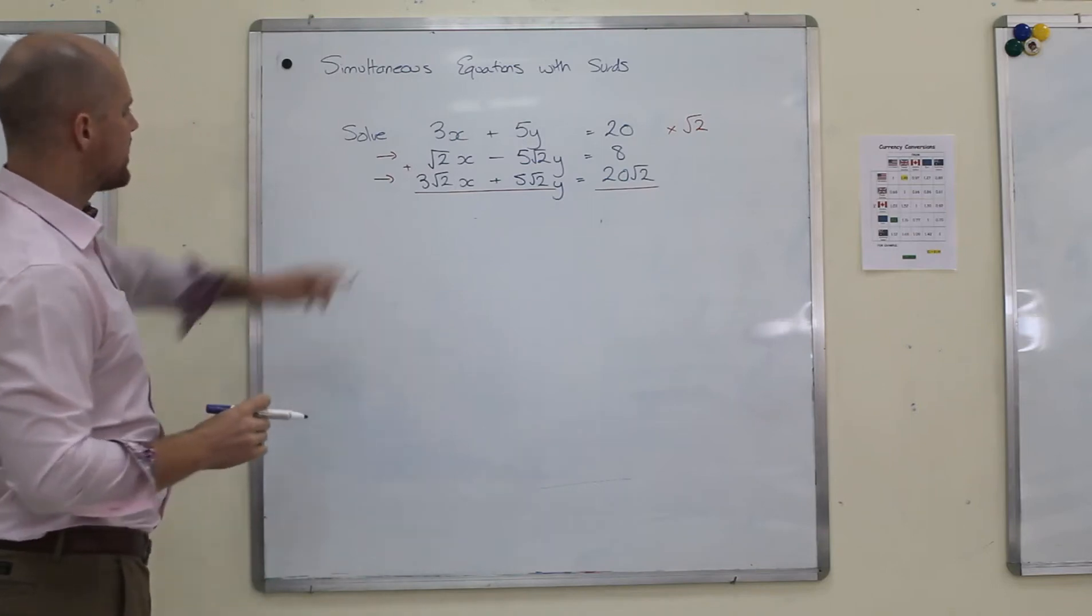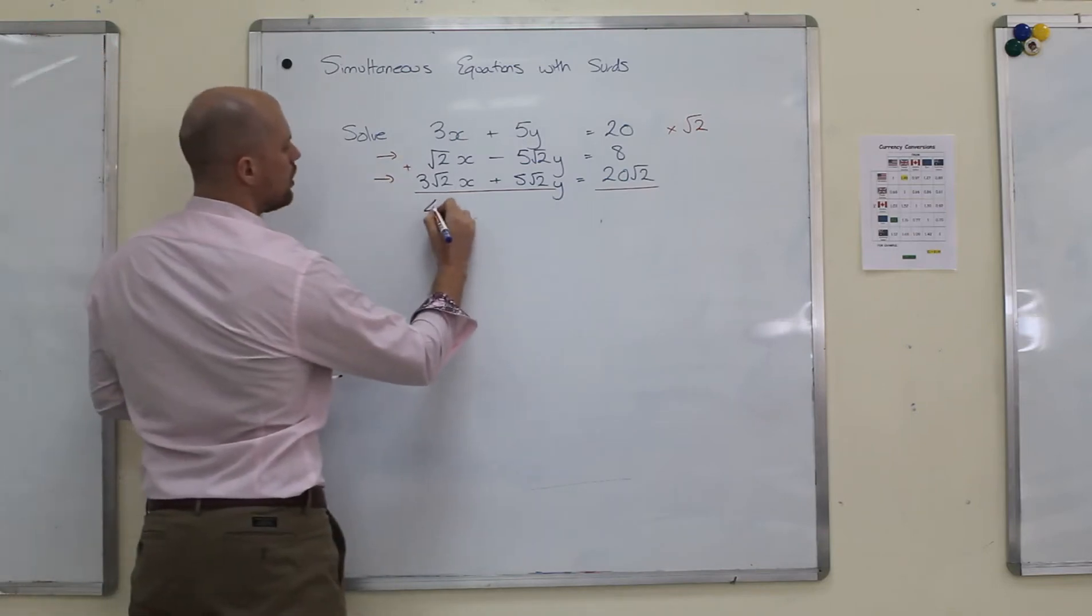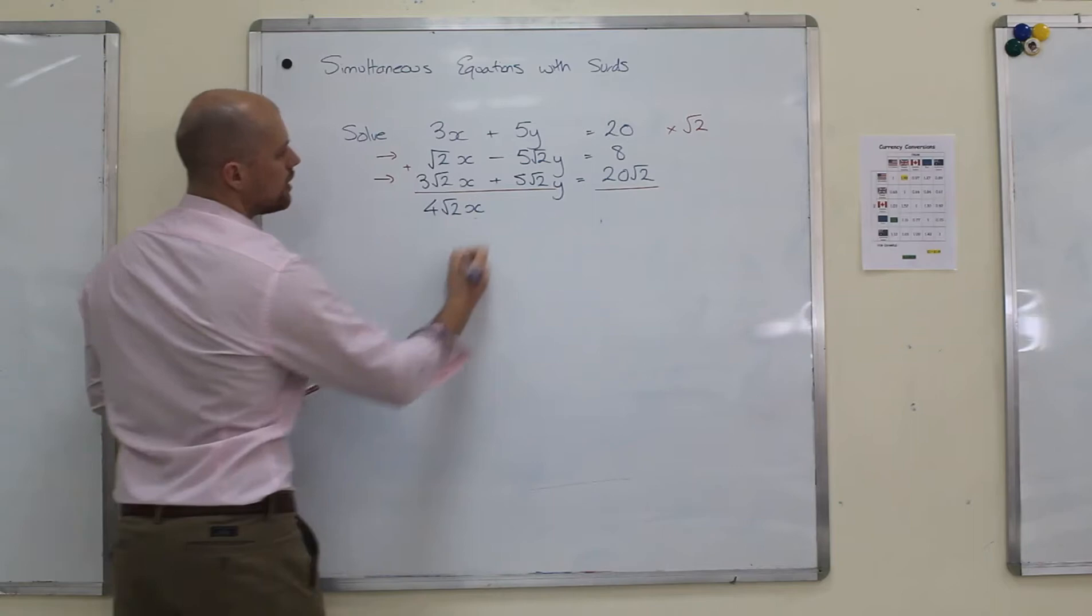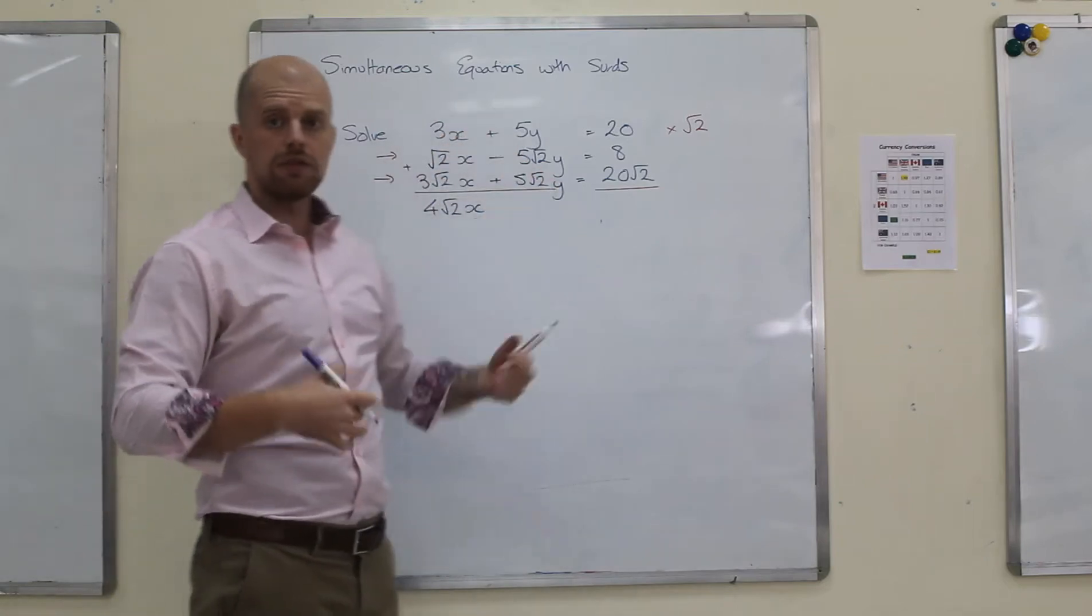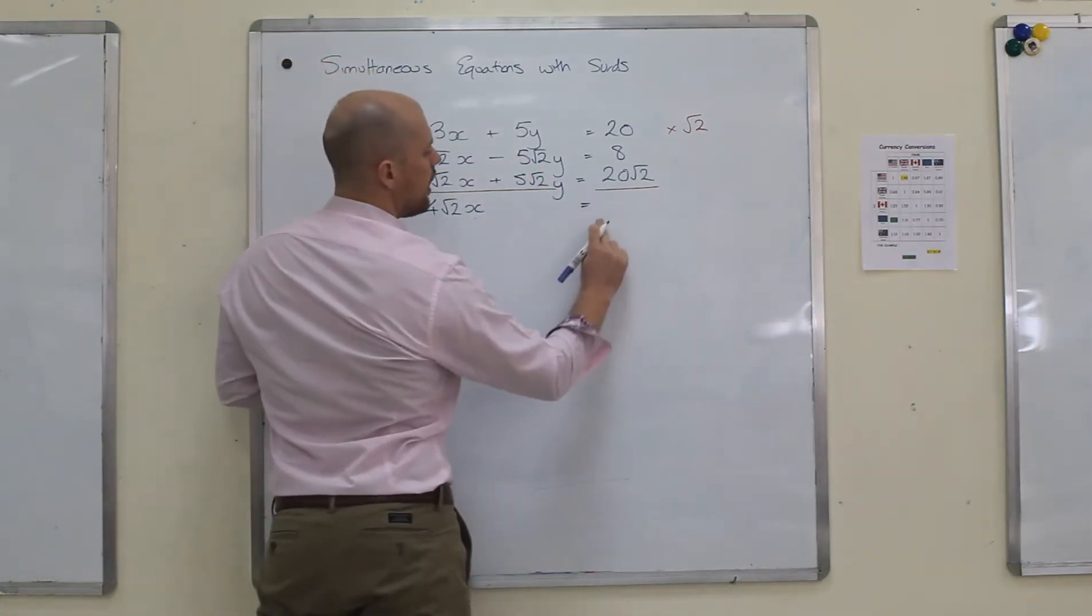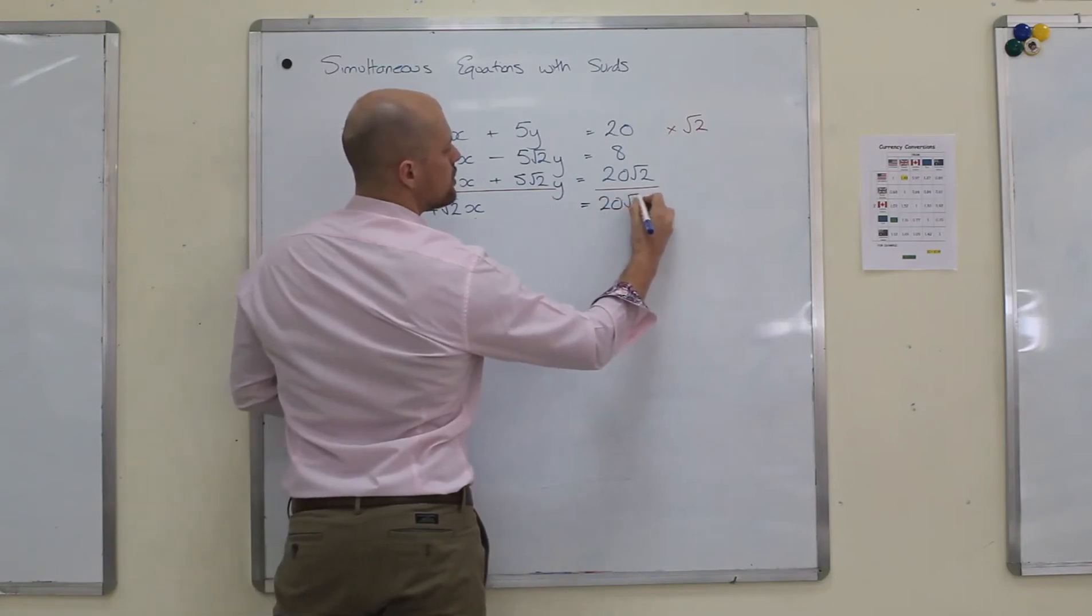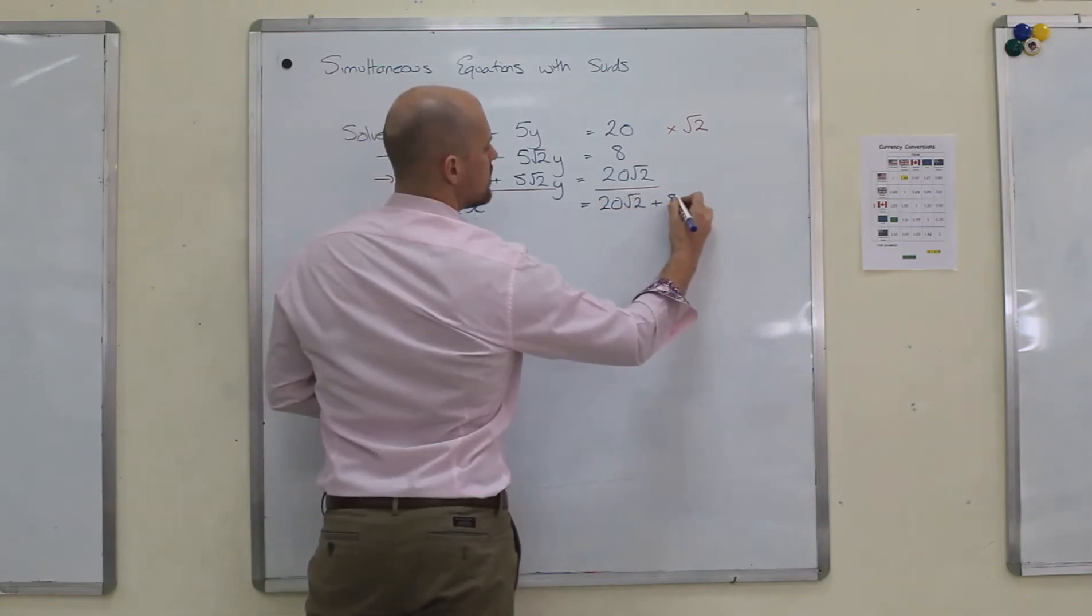So on the left-hand side, I have 4 root 2x. 5 root 2y and minus 5 root 2y cancel. And on the right, I get 20 root 2 plus 8.